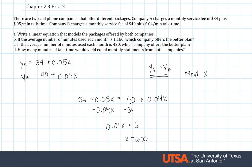Then x equals 600. So what this means is at 600 minutes, both companies are going to charge the same amount.